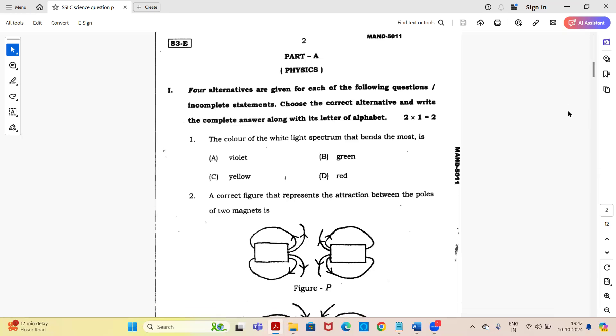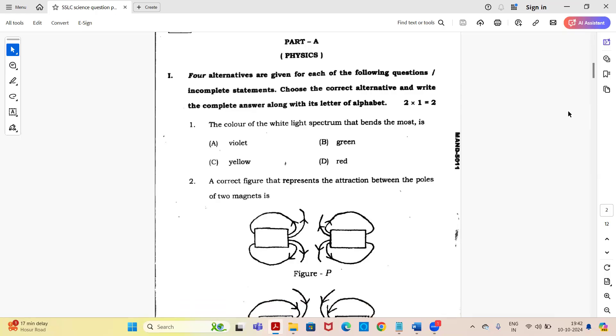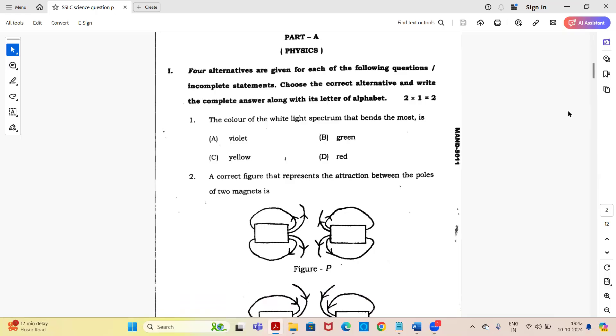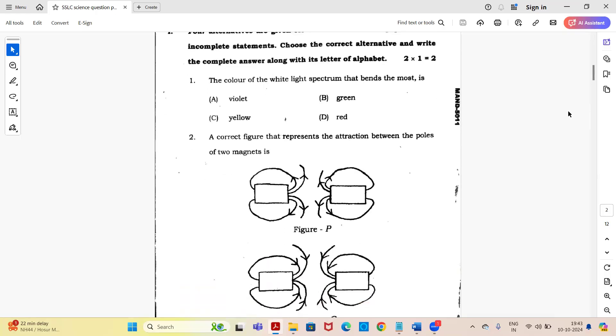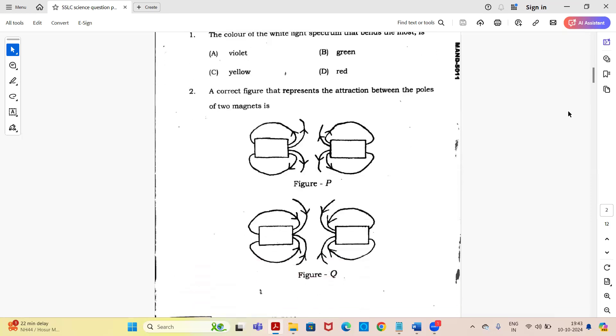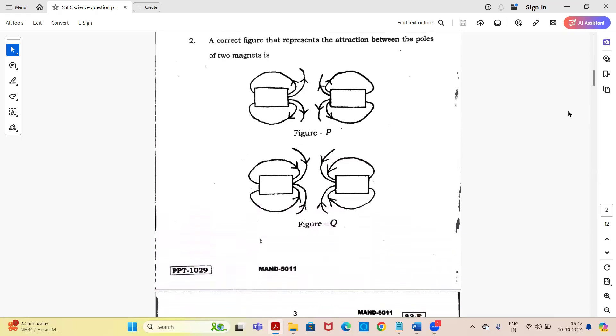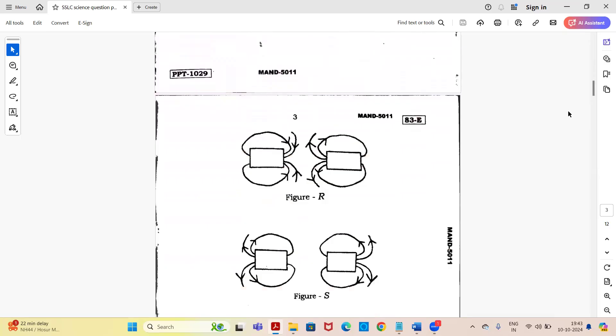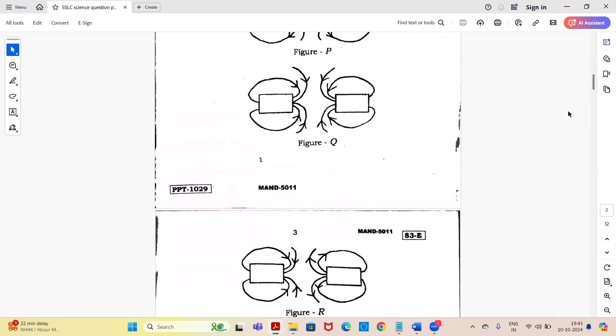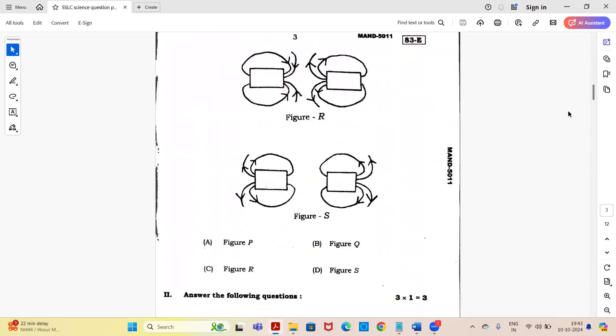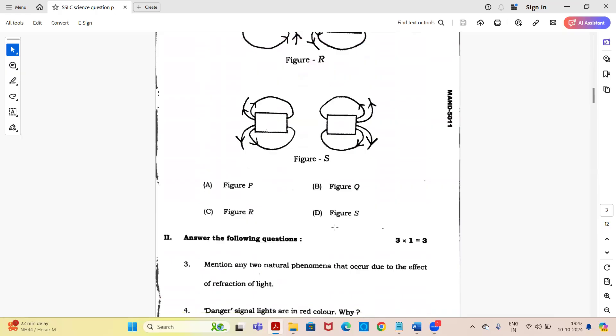Part A physics: four alternatives are given for each of the following questions or incomplete statements. Choose the correct alternative and write the complete answer along with its letter of alphabet. First question: the color of white light spectrum that bends the most is violet, green, yellow or red. Next, select the correct figure that represents the attraction between the poles of two magnets - figure P, Q, R or S. You have to observe the figure and select which is the right one.